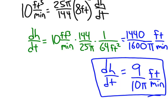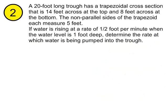That was fun. Let's go on to the next one. We have a 20-foot long trough that has a trapezoidal cross section. It's 14 feet across at the top, 8 feet across at the bottom. The non-parallel sides of the trapezoid each measure 5 feet. Water is rising at a rate of 1.5 feet per minute when the water level is 1 foot deep. Determine the rate at which water is being pumped into the trough.